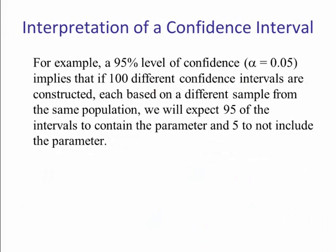So for example, a 95% confidence interval, alpha equal 0.05, implies that if we did 100 different confidence intervals, each one based upon a different sample from the same population, we would expect 95 of the intervals to contain the parameter and 5 not.